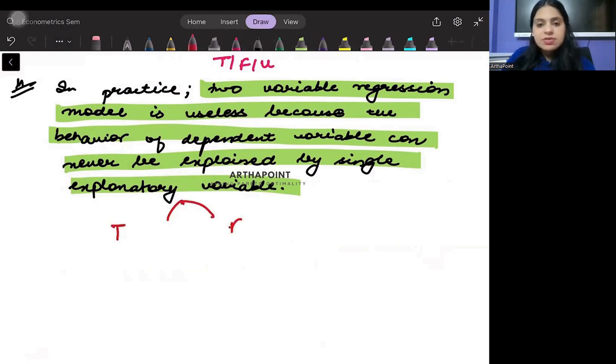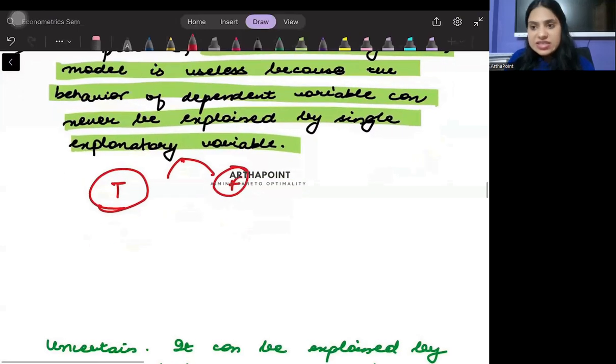So a lot of times there exists regression equations which can simply be explained through one variable. For example, I can say that consumption is a function of disposable income.